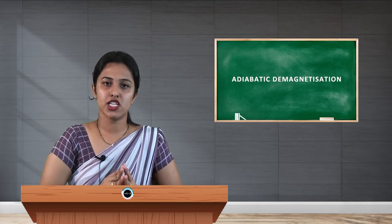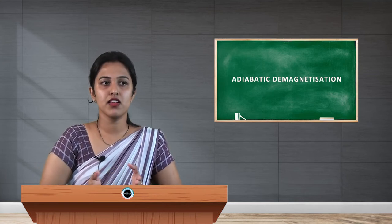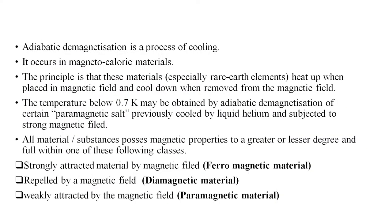Adiabatic demagnetization is a process of cooling. It occurs in magnetocaloric materials. The principle is that these materials — especially rare earth elements — heat up when placed in a magnetic field and cool down when removed from the magnetic field. The principle is mainly based on two processes: one during magnetization and another during demagnetization.